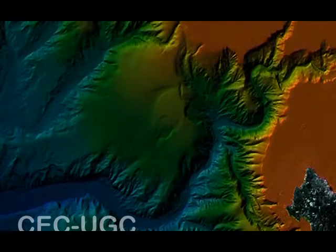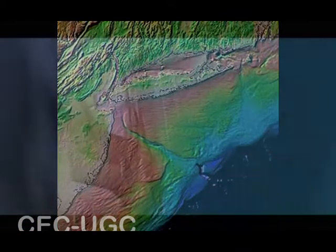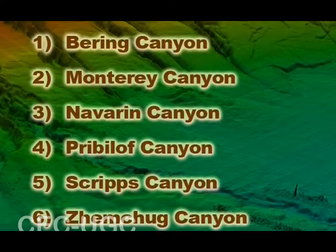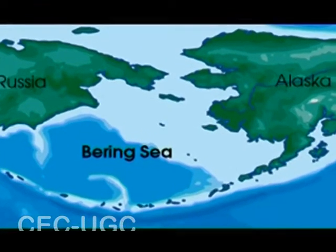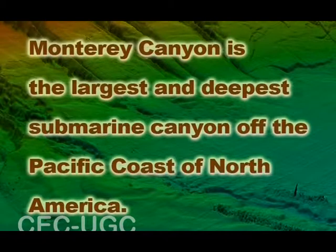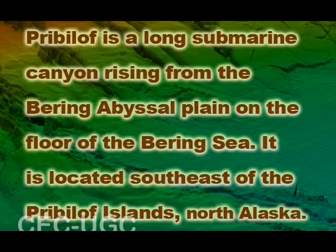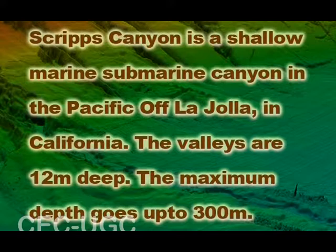Deep submarine canyons are sometimes found cutting across the shelf and slope, often extending from the mouths of terrestrial rivers. The notable submarine canyons of the Pacific Ocean include the Bering Canyon, the Monterey Canyon, the Navarine Canyon, the Pribilov Canyon, the Scripps Canyon, and the Jamsuk Canyon. Three of the largest submarine canyons in the world are incised into the Beringian margin of the Bering Sea. The Monterey Canyon is the largest and deepest submarine canyon on the Pacific Coast of North America. The Pribilov is a long submarine canyon rising from the Bering abyssal plain, located southeast of the Pribilov Islands, North Alaska.